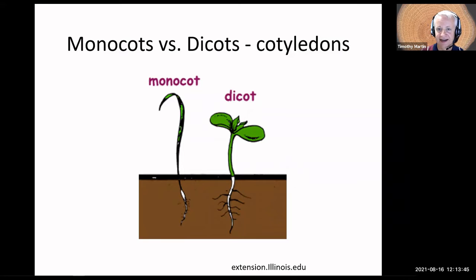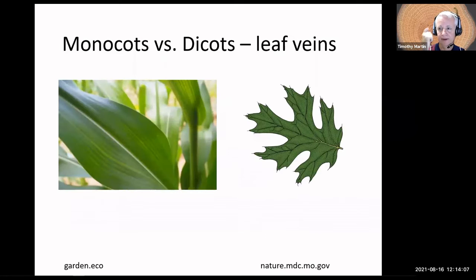Monocots have a single cotyledon. Cotyledon is just the seed leaf, the first leaf that's produced when a seed germinates. Monocots have one of those and dicots have two. Another characteristic of monocots and dicots is their leaf vasculature. In monocots, generally, they have parallel leaf veins. This is an example from a corn plant. Whereas in dicots, like this oak, the leaf veins form a network, sort of a web or net-like network of veins.